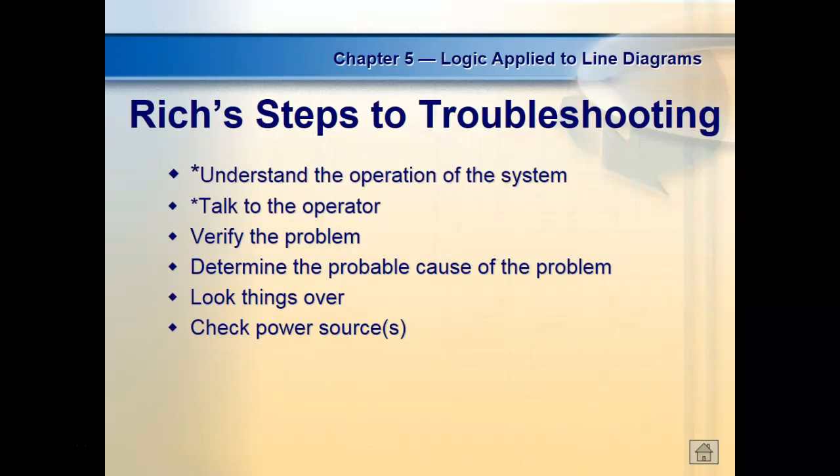Richard's steps of troubleshooting: the first thing we do is understand the operation of the circuit. One of the first things they'll probably do when you get into a plant is put you with somebody — you just shadow them. What they do at Rouse is move those people around to every section so they understand how that line is supposed to operate. Next thing you do is talk to the people who operate things — tell me what's going on. That's one of the most valuable pieces of information before you go out and start making a mess.